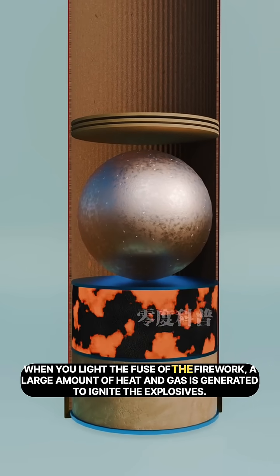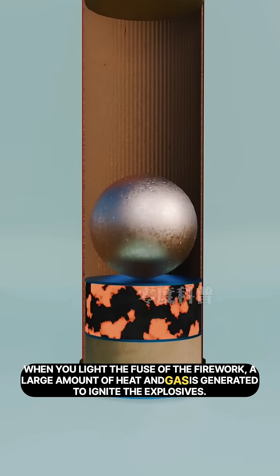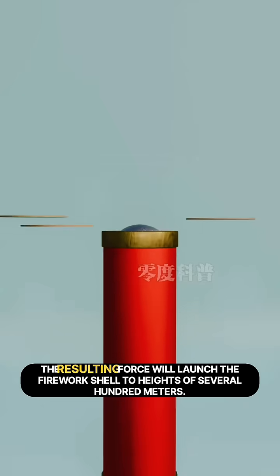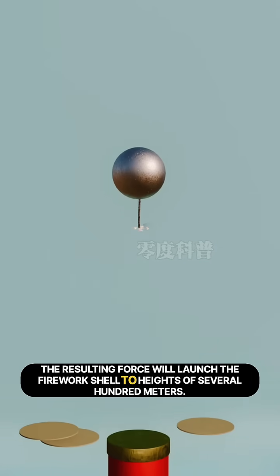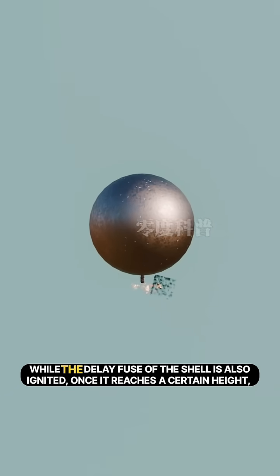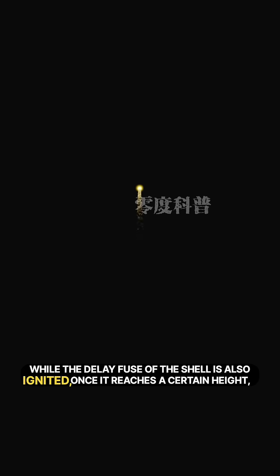When you light the fuse of the firework, a large amount of heat and gas is generated to ignite the explosives. The resulting force will launch the firework shell to heights of several hundred meters, while the delay fuse of the shell is also ignited.